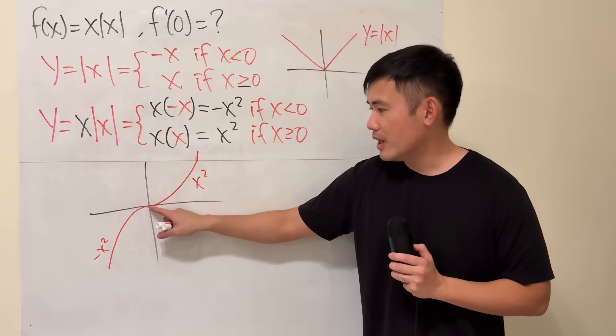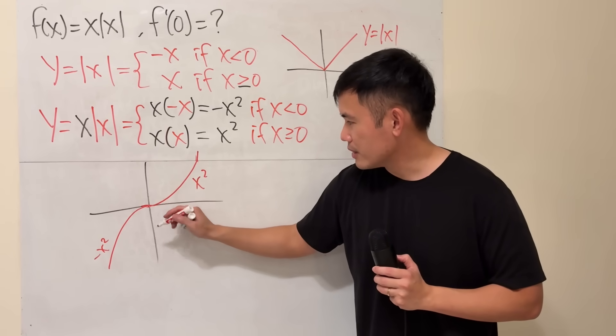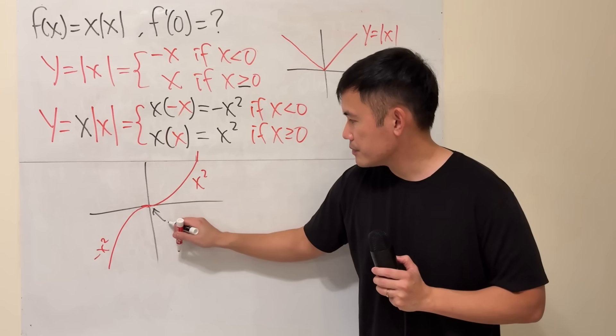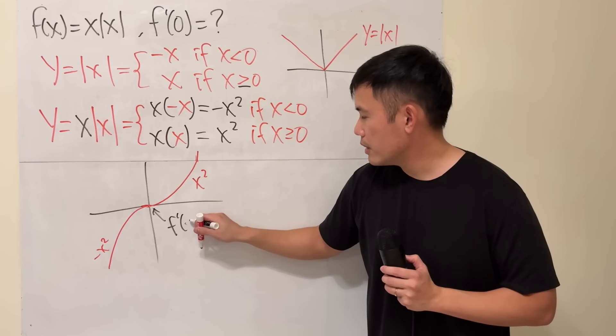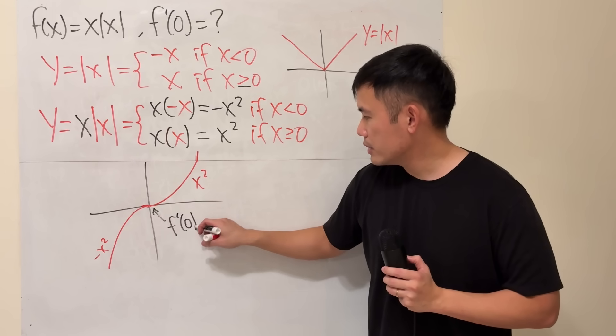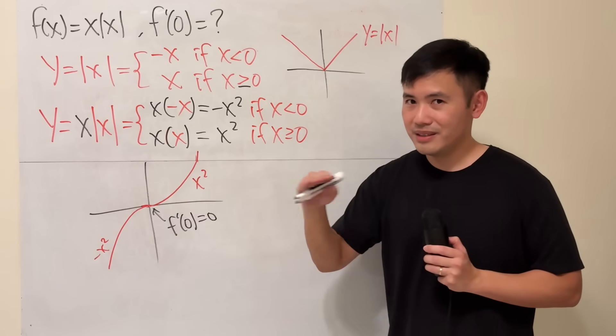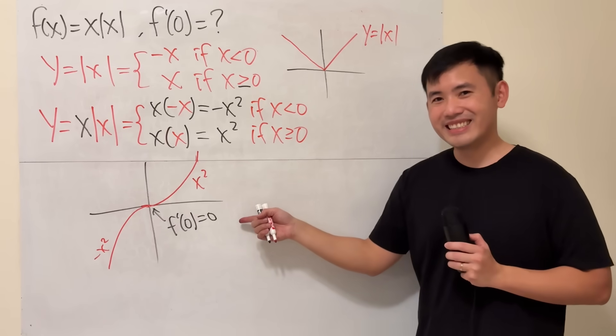And now, as you can see, right here, we do have derivative. The derivative here. f prime of 0 is equal to 0. The slope of the tangent line here is 0. Just like that.